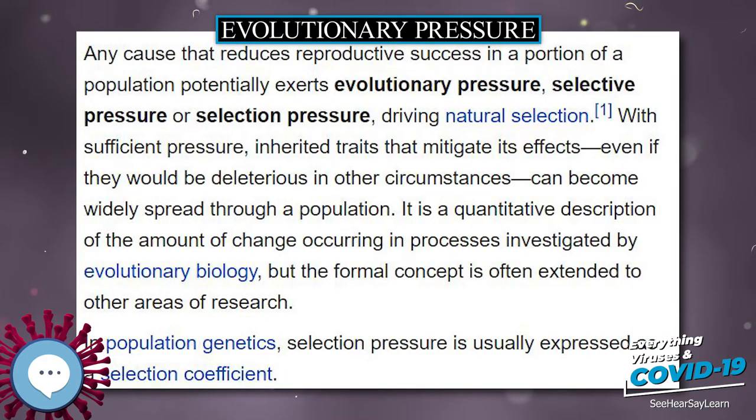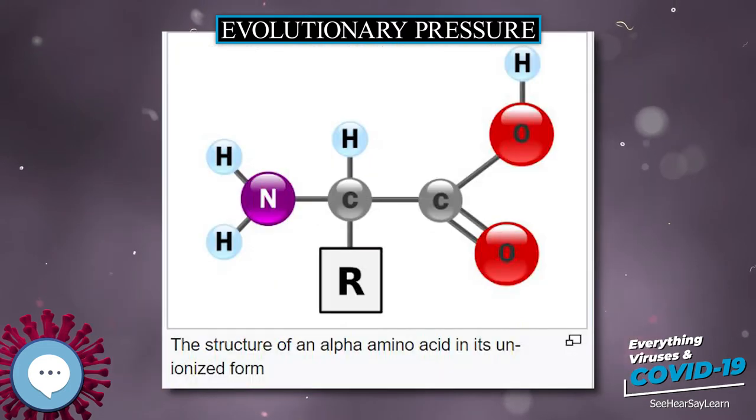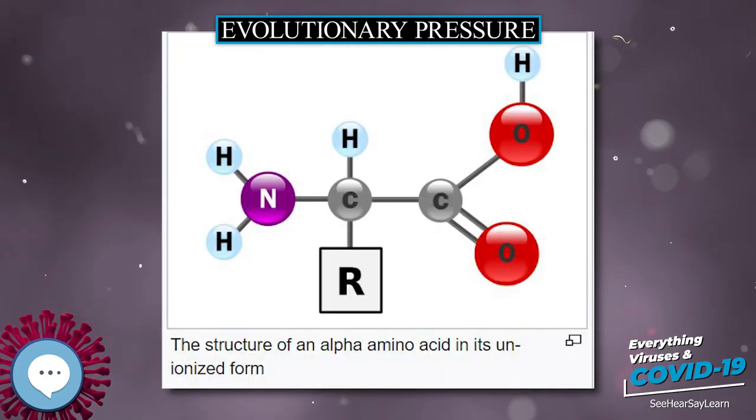In population genetics, selection pressure is usually expressed as a selection coefficient.